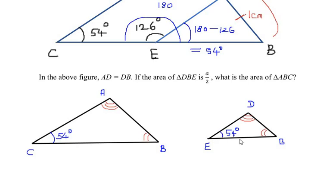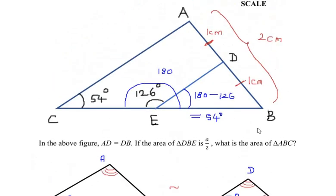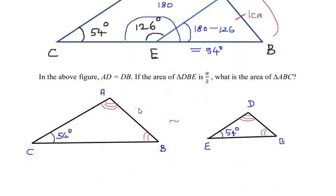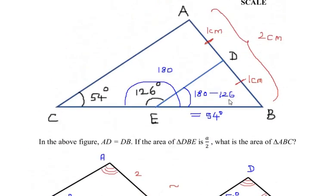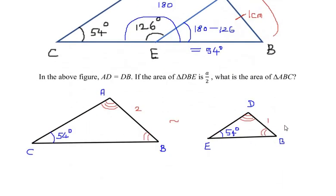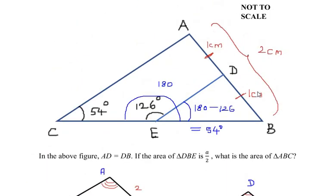Now once we have established the relationship between the two triangles as similar triangles, let us look at the sides. In this case I have taken the side as two centimeters or two units, so DB is one centimeter. You can take any numbers, you will be getting the same answer.